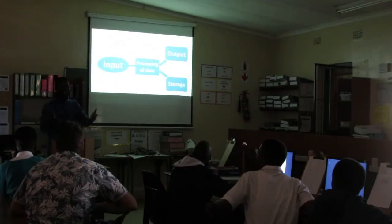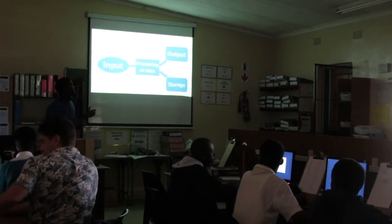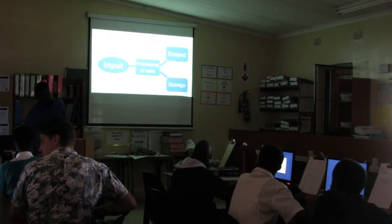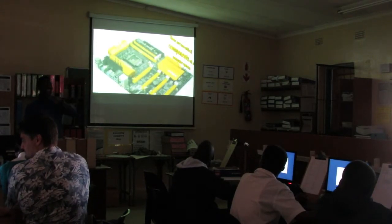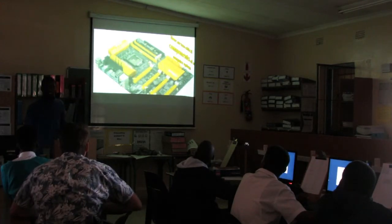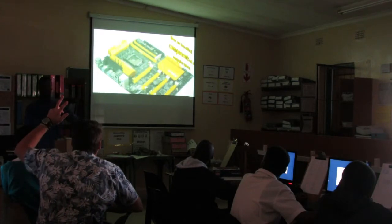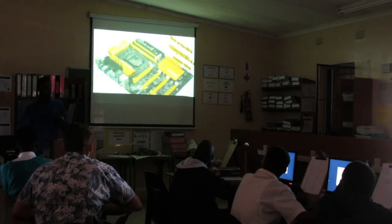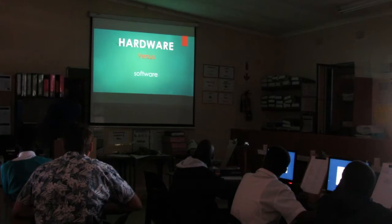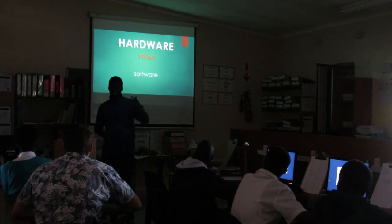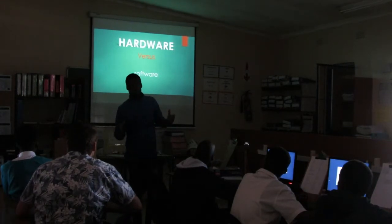You guys have screens in front of you. Often the input or output needs to be stored, just like the instructions that we have on the computer. There are two critical components of a computer system. Can anyone guess what those critical components are? The two critical components of a computer are the hardware and the software.